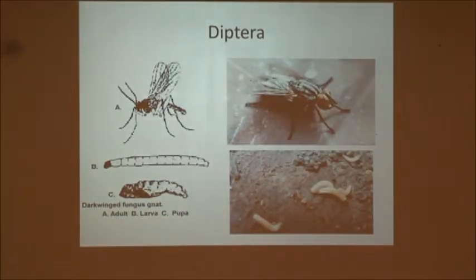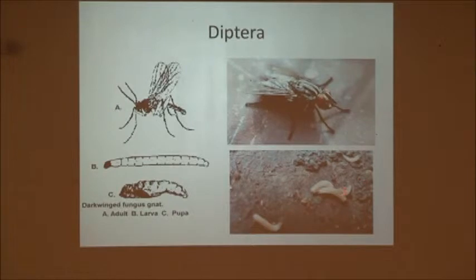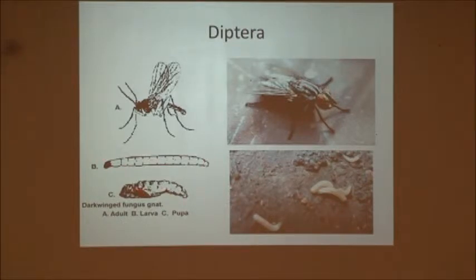Diptera — this is your flies and gnats, which in baby form are little maggots. This would be your adult fly, your larva is the little maggot, and your pupa stage.